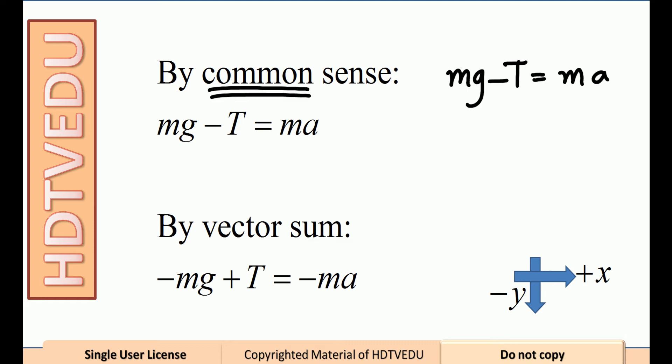Bigger force minus smaller force equals net force. mg minus T equals ma.